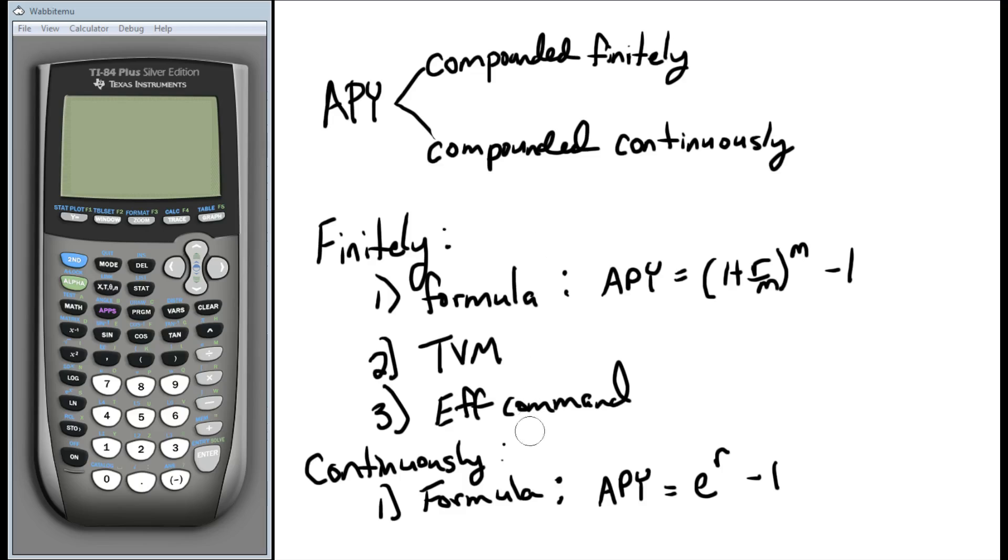If it's finitely, we have a couple of different methods for tackling how to find this rate. So we have a formula, and if you notice, this formula, the APY, that annual percent yield, it has a look that's very similar to the actual compound interest formula itself. We're used to P times (1 + r/m) to the mt power, right? Well, since we're talking about a single year, that t is 1, so we don't need it. And since we're only talking about rate of growth, it doesn't matter how much we invest, it's still going to grow at the same rate. So we don't have to worry about the P.